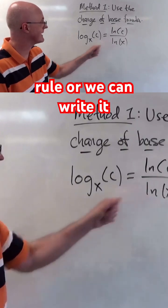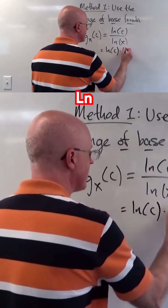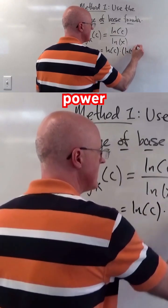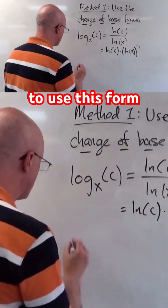We can either use the quotient rule, or we can write it as natural log of c times ln of x to the negative 1 power. Either method is okay. It's probably a little easier to use this form.